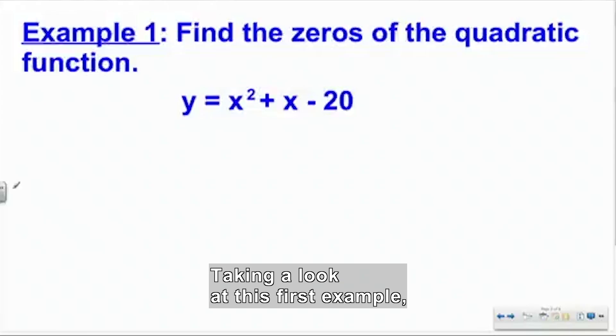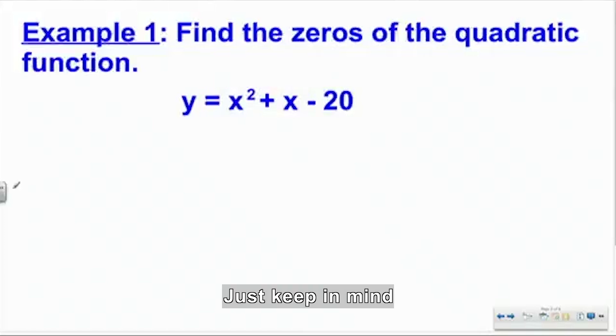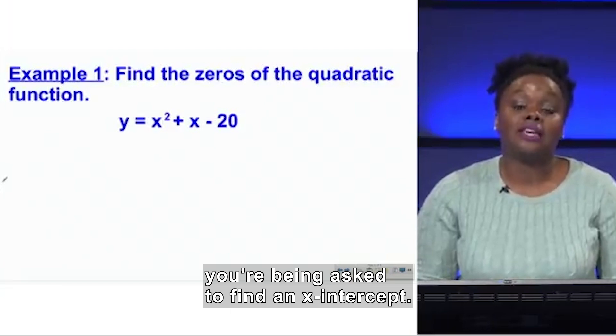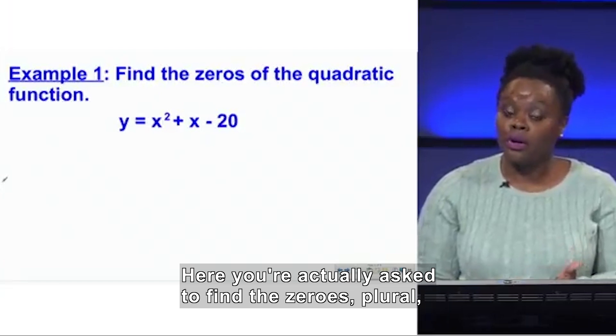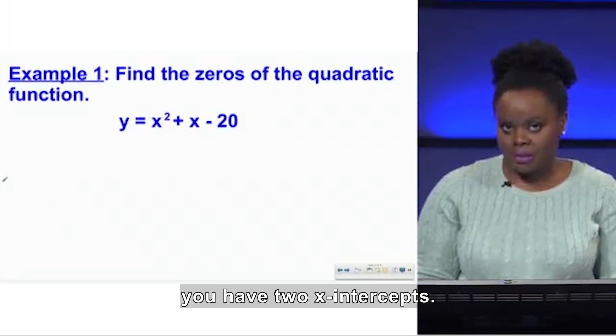So taking a look at this first example, when you're being asked to find the zeros of this quadratic function, all you have to keep in mind is that when you're asked to find a zero, you're being asked to find an x-intercept. And here you're actually being asked to find the zeros, plural, because typically in our quadratic functions, we have two x-intercepts, right?